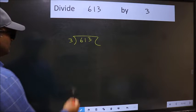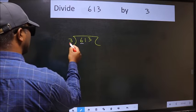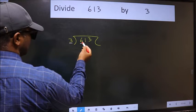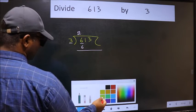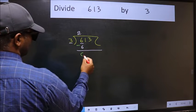Next, here we have 6 and here 3. When do we get 6 in the 3 table? 3 times 2 is 6. Now we should subtract. We get 0.